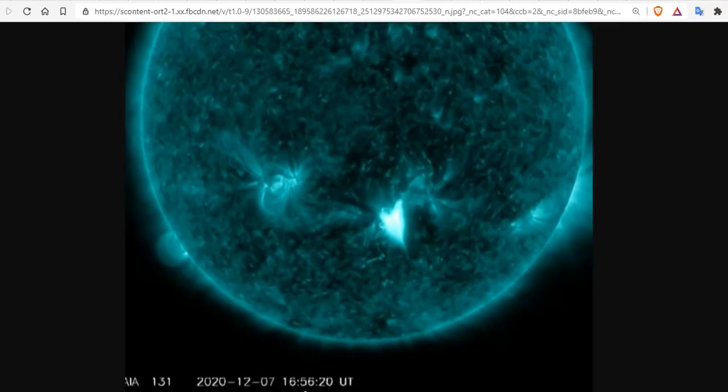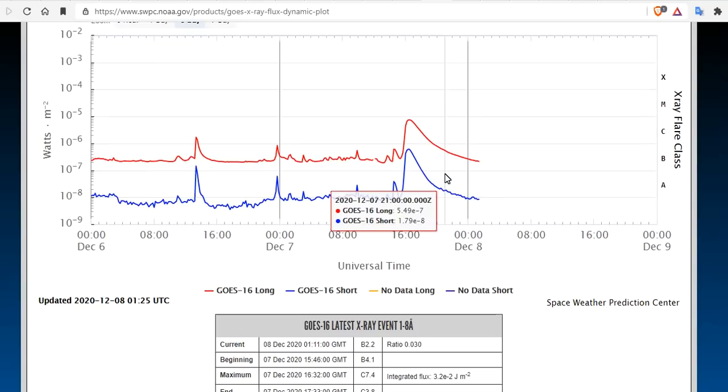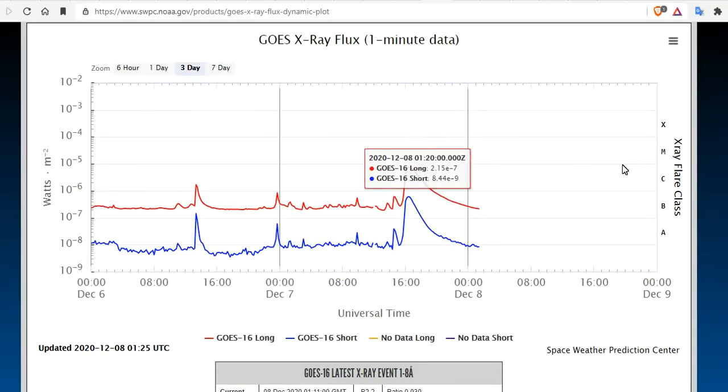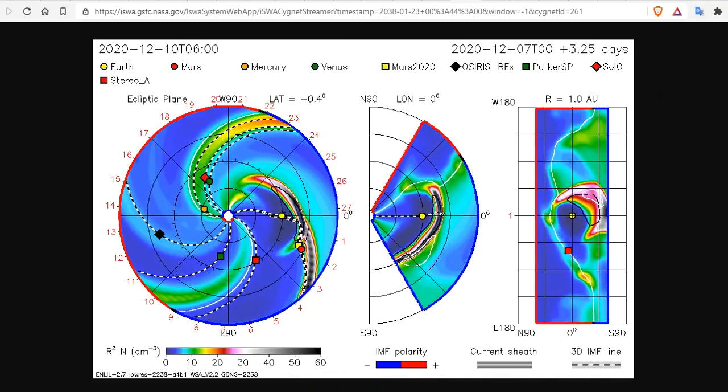There's the picture there. 1656.20 UT happening today. There it was, directly Earth-facing, just a little south of the equator, in my opinion. There it is on the Ghost X-Ray Flux, the event. It's still ending now as I speak. And there it is, already up on ISWA.